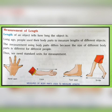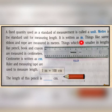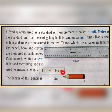Length is how long an object is. Long ago, people used hand span, cubit, foot span, and stride for measuring length. But nowadays we have standard units for measurement of length. The standard unit for measuring length is the meter, written as 'm'. Centimeter and millimeter are smaller units, and 100 centimeters make one meter.